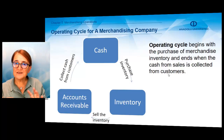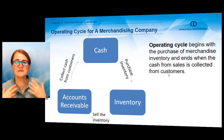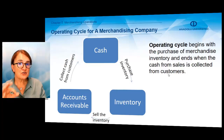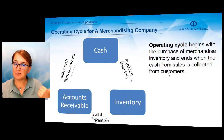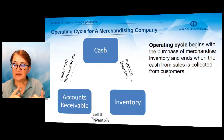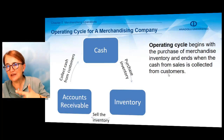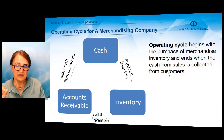Merchandising companies are different from service companies and manufacturing companies. In a merchandising company, by using their money they will purchase inventory, and the operating cycle begins with the purchase of merchandise inventory. The company buys inventory in order to sell to customers. By selling inventory, the company will earn sales revenue, but sometimes companies make credit sales, so inventory is converted to accounts receivable, and on the due dates the company collects receivables and gets cash on hand to start another cycle.